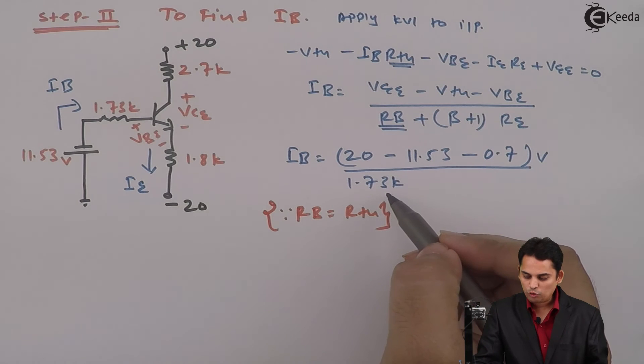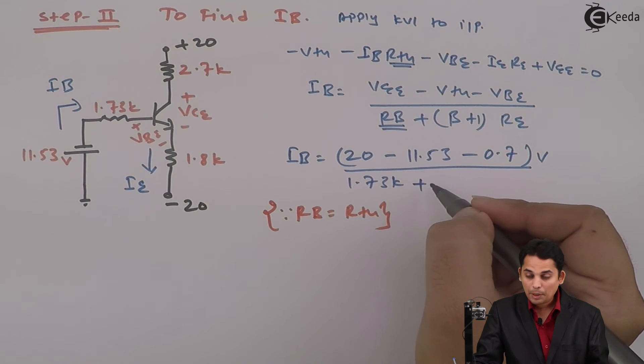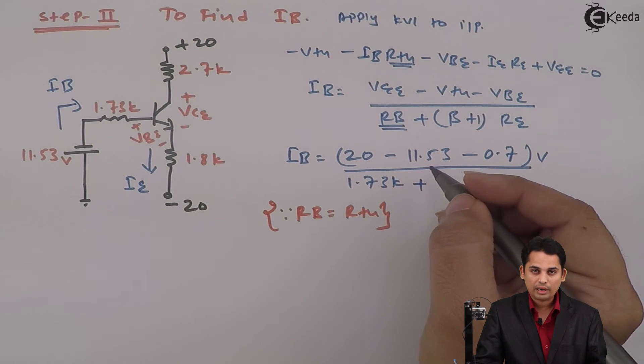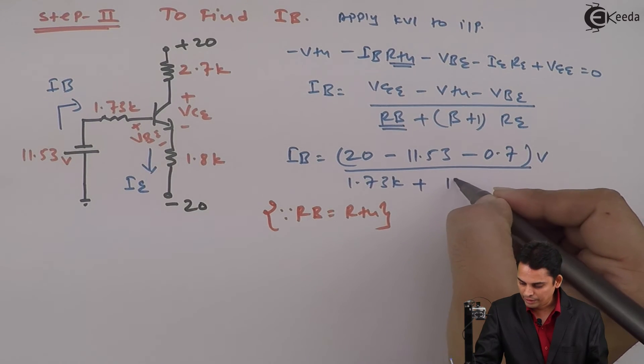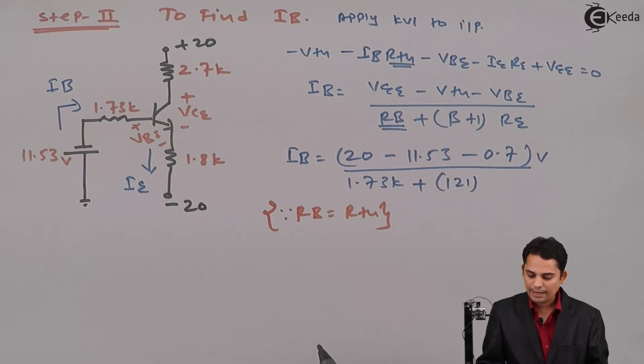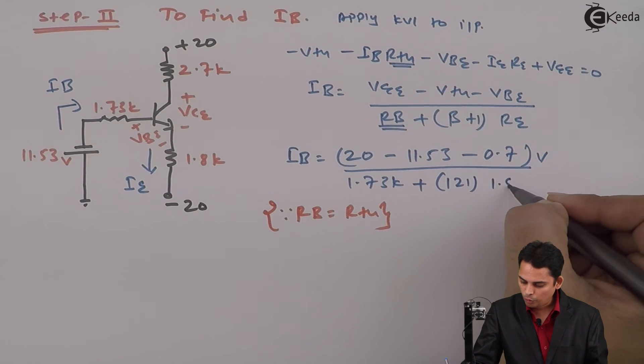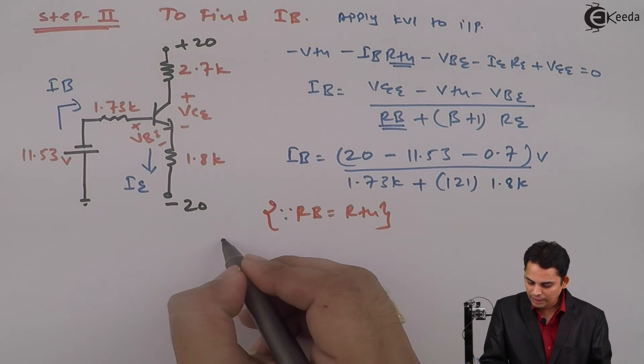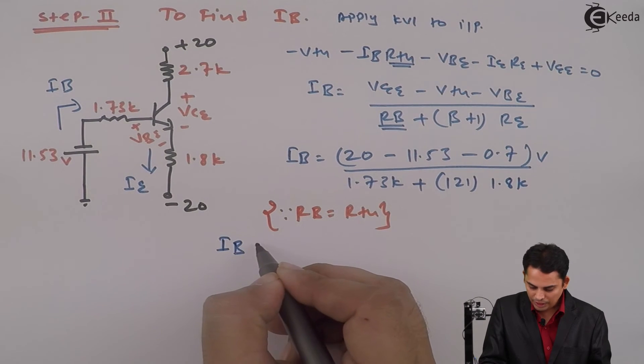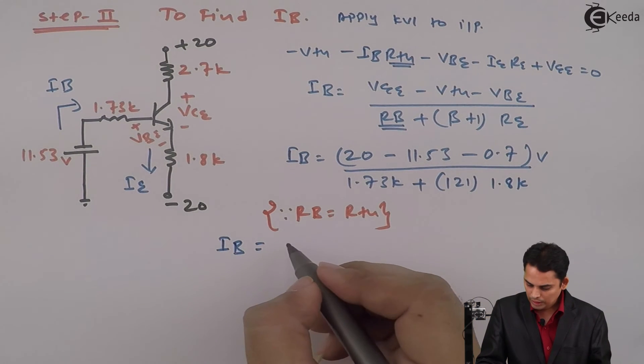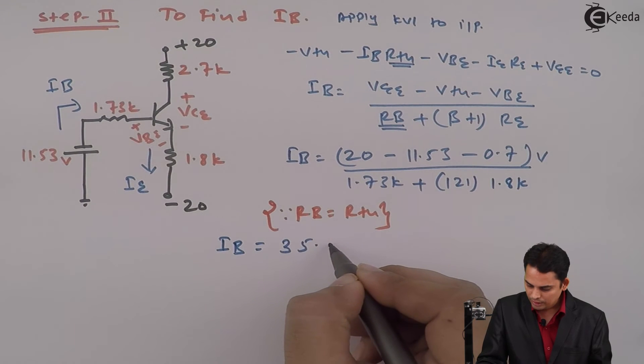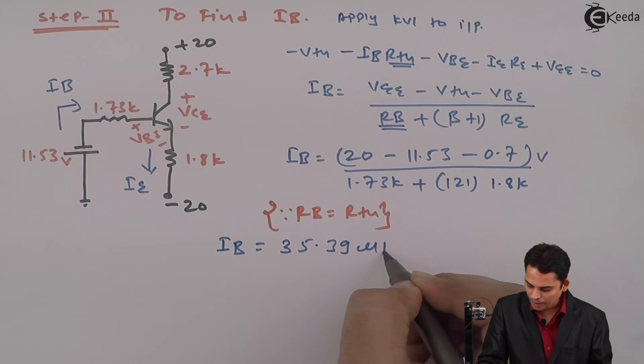Now it is 1.73K plus beta they have given as 120, beta plus 1 will become 121, hence it is 121 multiplied by RE that is 1.8K. If we solve this, we will get base current IB is equal to 35.39 micro amperes.